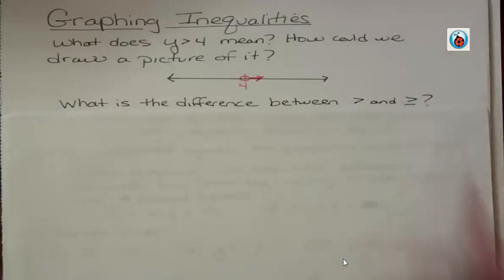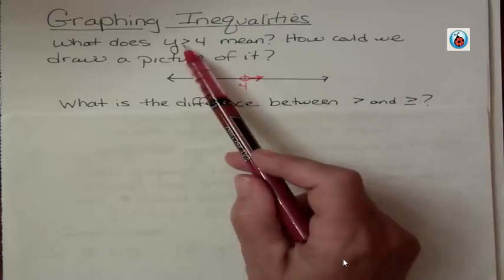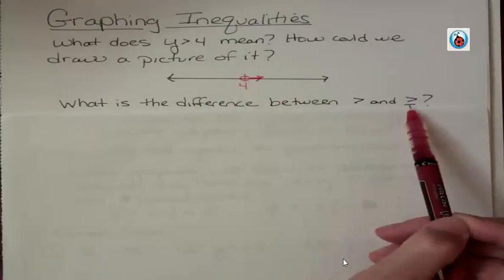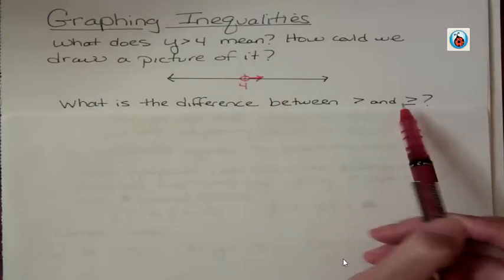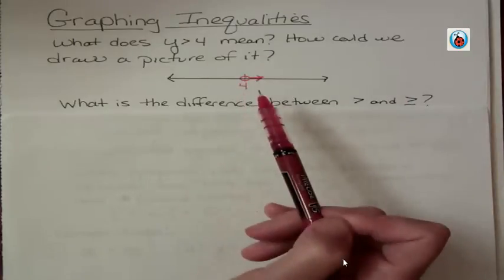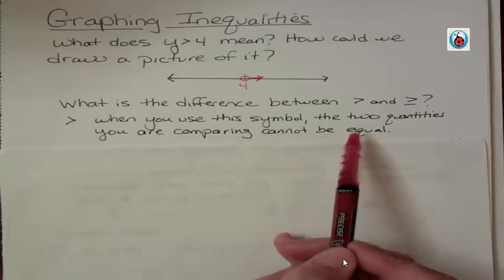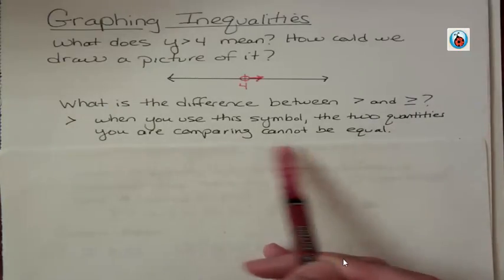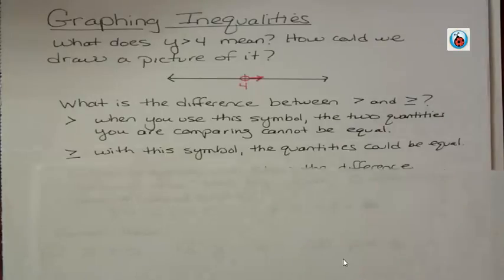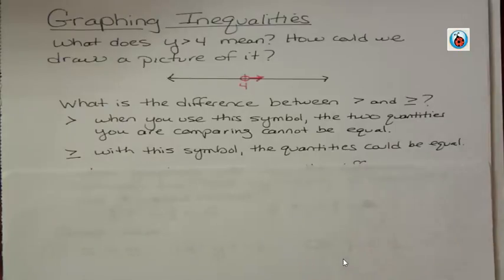What's the difference between greater than and greater than equal to? Well, we just had a greater than, which the difference between that and greater than equal to is that 4 is not part of the solution. It's a starting point, but it's not part of the solution. When you use the greater than symbol, the two quantities that you are comparing cannot be equal. But when you use the greater than equal to symbol, the quantities could be equal.